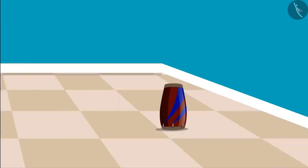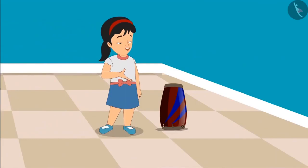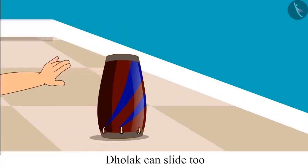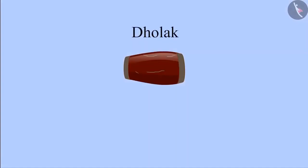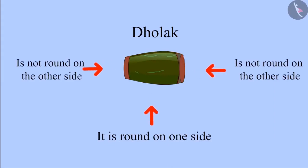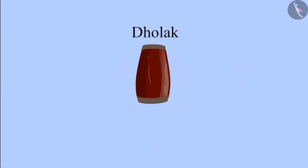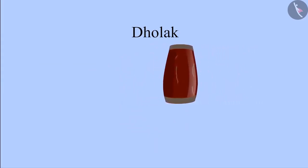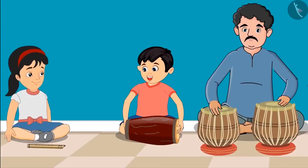After some time, Pinky looks at another dholak and discovers they can also slide it. Chotu realizes this means the dholak is round on one side and not round on the other. The dholak will roll if it is on its round surface, and will slide if it is on the surface which is not round — meaning a dholak can both roll and slide!